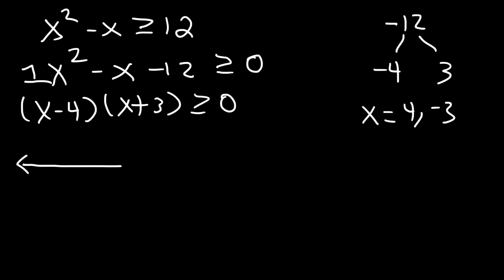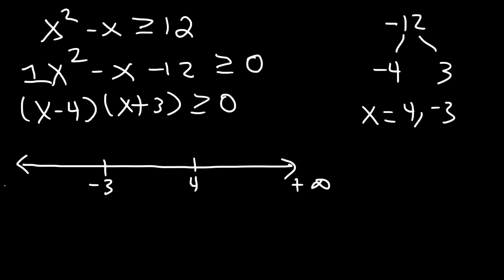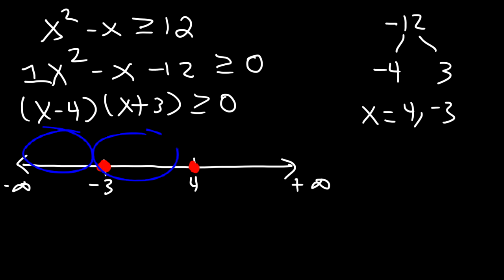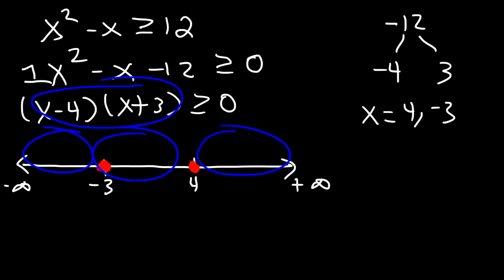We need a number line to get the right answer. We have negative 3 on the left and 4 on the right, with positive infinity on the right and negative infinity on the left. Since the solution includes 4 and negative 3, we put a closed circle at those points. If it doesn't include those points, you use an open circle. The product of the two factors has to be greater than or equal to 0, so we need to check these three regions to see when the expression is positive.